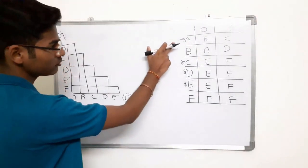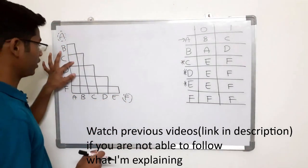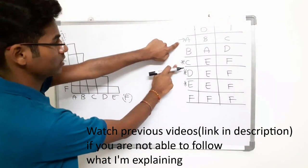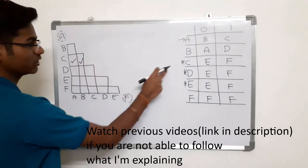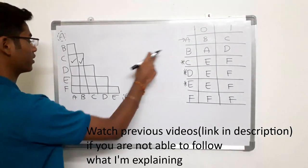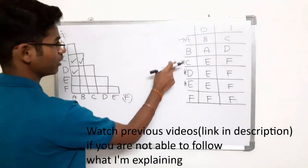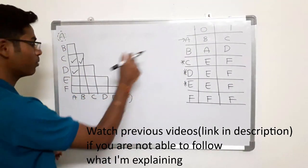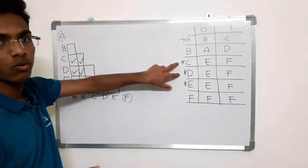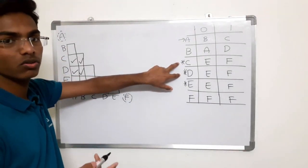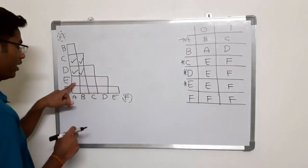Now repeat the same process. For cell B and A: A is a non-final state, B is a non-final state, so leave it. For C and A: C is a final state, A is a non-final state, so mark it. For C and B: C is a final state and B is a non-final state, so mark it. For D and A: D is final, A is non-final, so mark it. For D and B: D is final, B is non-final, so mark it.